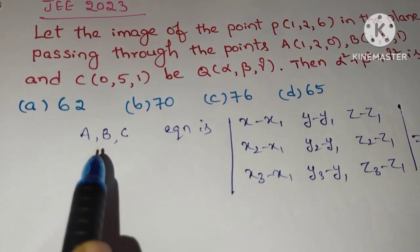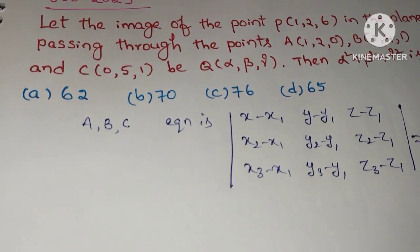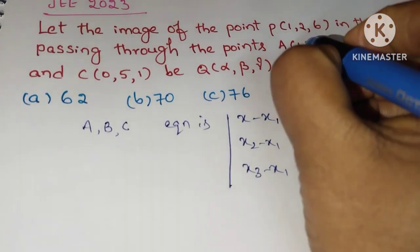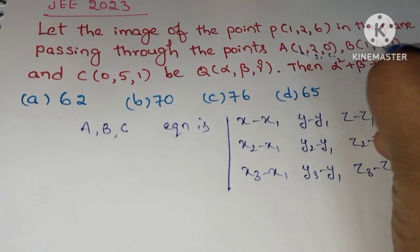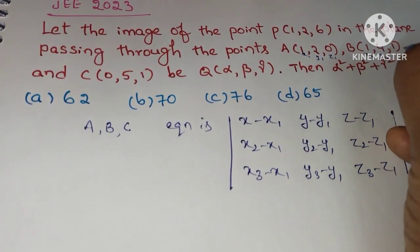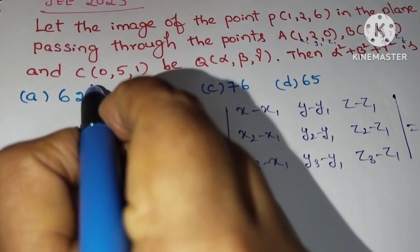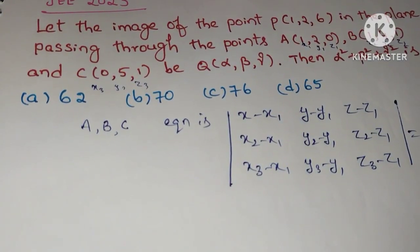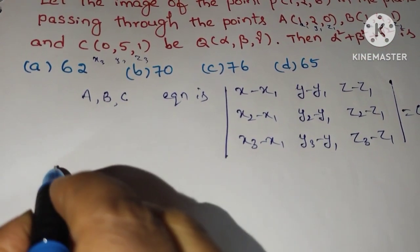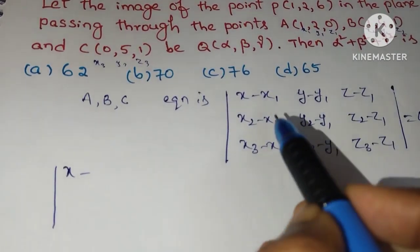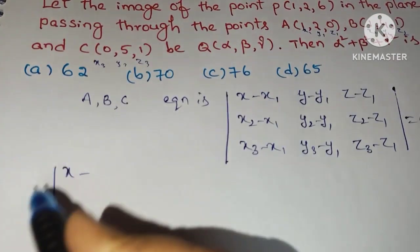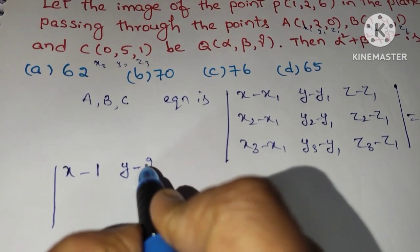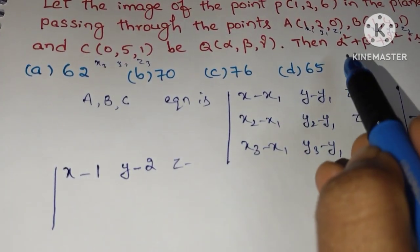This is the formula to find the equation of the plane using three points. We identify A as (x1, y1, z1), B as (x2, y2, z2), and C as (x3, y3, z3). Now substitute these values in the formula. So x−x1 becomes x−1, y−y1 becomes y−2, and z−z1 becomes z−0.